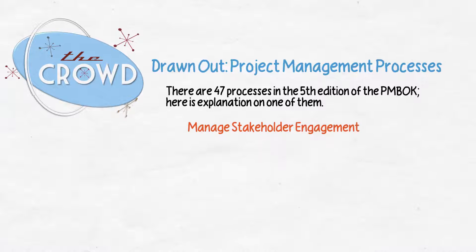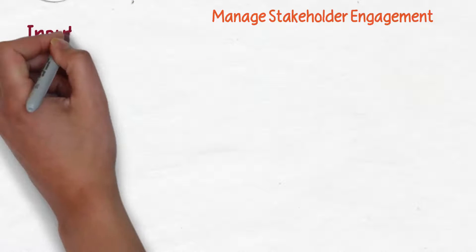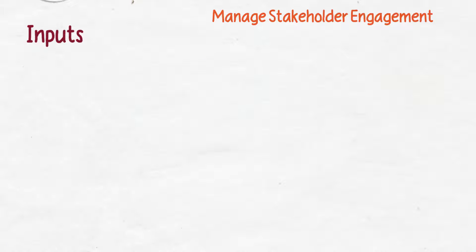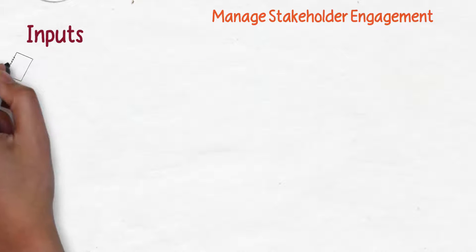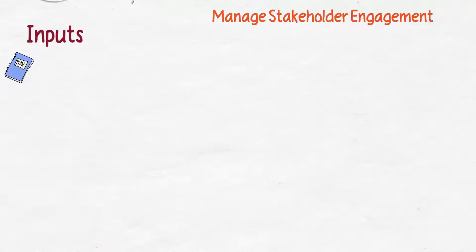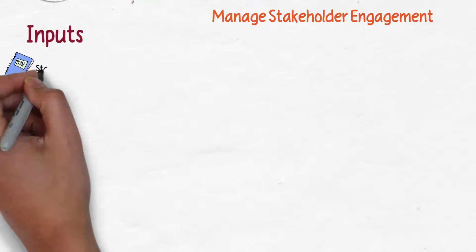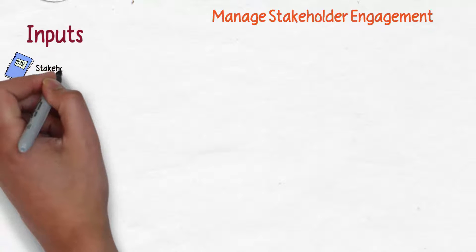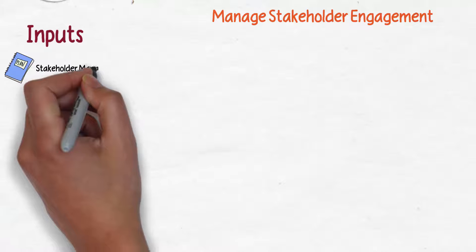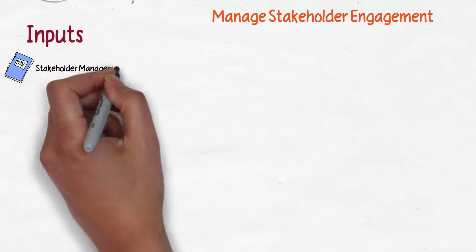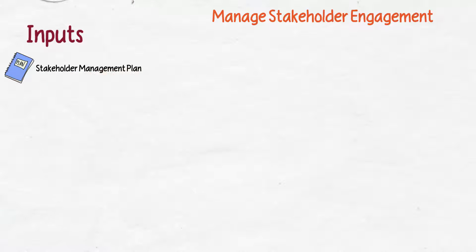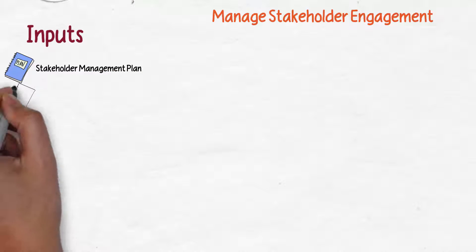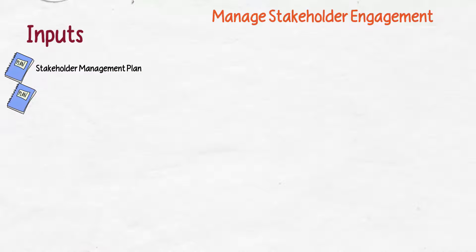Manage stakeholder engagement is how we are going to work with our stakeholders according to our plans. So our inputs would naturally be our plans. The most important plan would be your stakeholder management plan, which helps us decide how we are going to work with them.